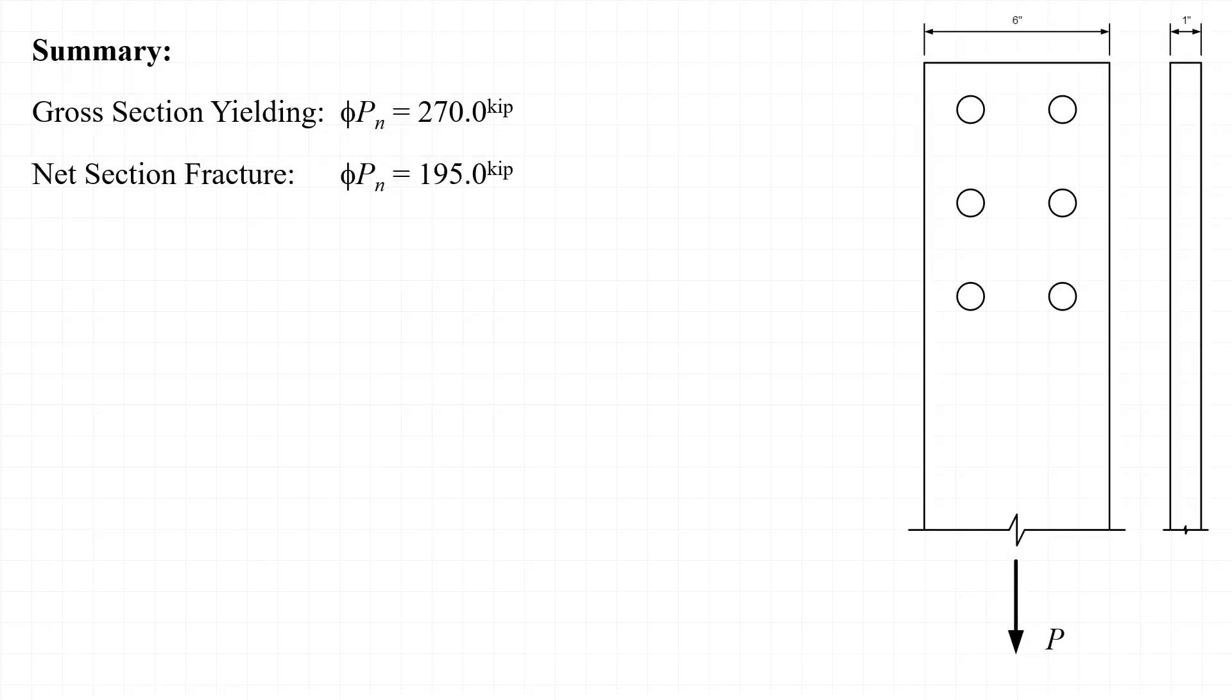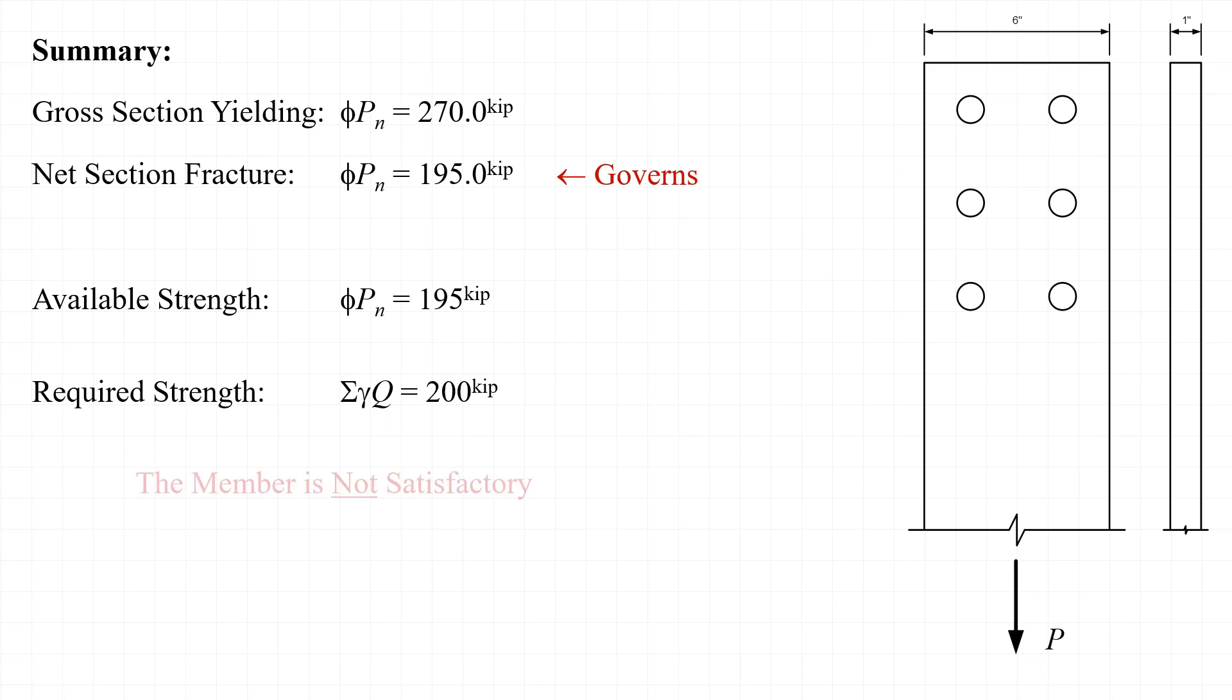In summary, we determined that the gross section yielding design strength phi times P sub n is 270 kips, and that the net section fracture design strength phi times P sub n is 195 kips. The lower of these two values is the limit state that governs the strength, and so our available strength for this bar is 195 kips. Recall that the required strength was 200 kips, so this member is not sufficient to carry the loads.